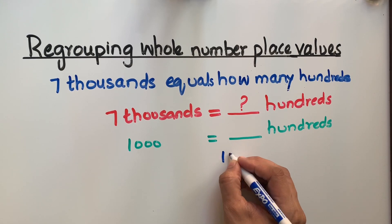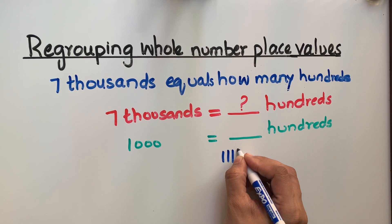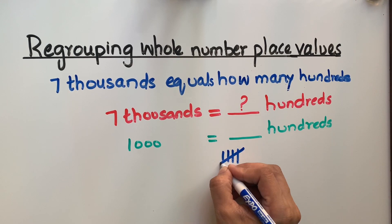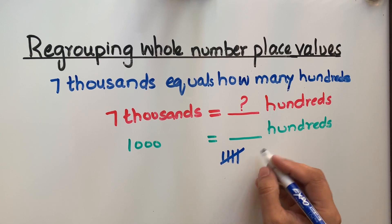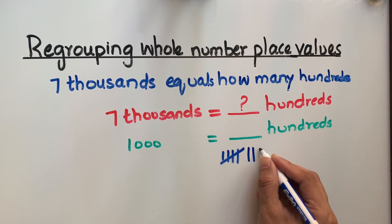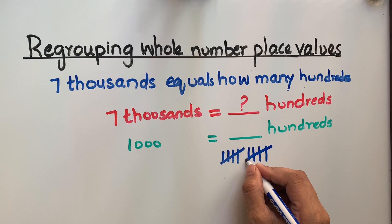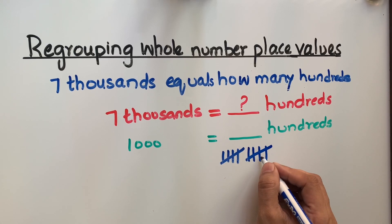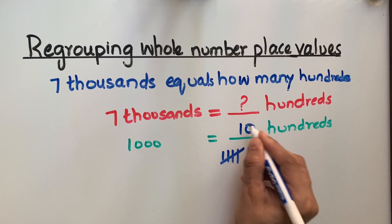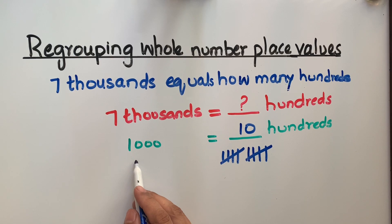One hundred, two hundred, three hundred, four hundred, five hundred, six hundred, seven hundred, eight hundred, nine hundred, ten hundred. Ten hundreds equals one thousand.